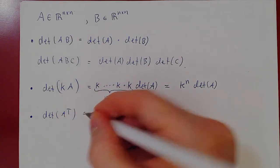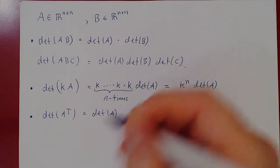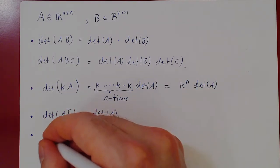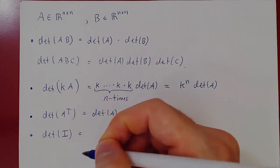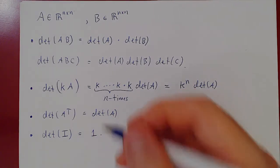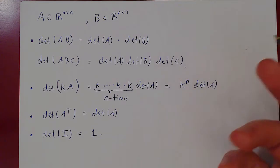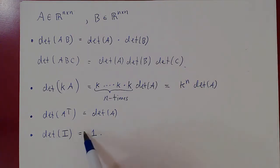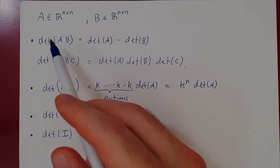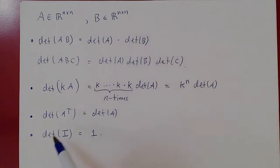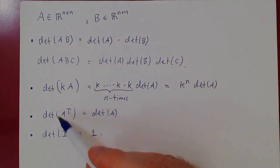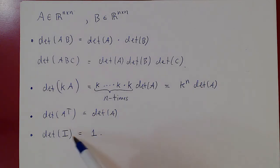Another key property: the determinant of KA is K to the n, where n is the number of rows of A, times the determinant of A. Also, if you transpose the matrix, it does not change the determinant. And the determinant of I for any size equals 1. Geometrically, multiplying by the identity matrix I does nothing — it doesn't change area or volume — so the scaling factor is just 1.